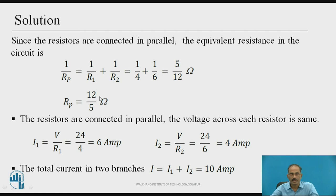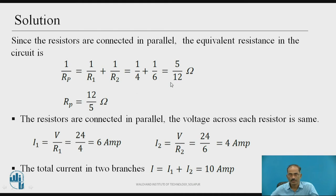R1 = 4 Ω and R2 = 6 Ω. So 1/Rp = 1/4 + 1/6. Taking LCM, this comes out to be 5/12. Therefore, Rp = 12/5 Ω.